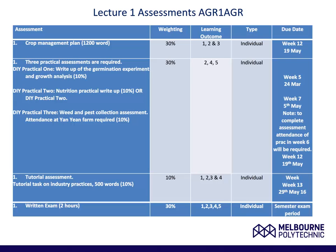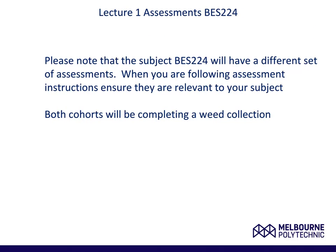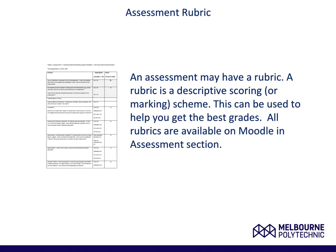Finally, there will be a tutorial assessment worth 10% and at the end, a two-hour written assessment. Please note that for subject VES 224, the assessments will be slightly different; however, both cohorts will be completing a weed collection. The equine students will be given more details of their assessments by Heather. For students who have not studied before, we supply for some assessments a document called an assessment rubric — this is a detailed description of the scoring or marking scheme applied to each assessment, and can help you better understand your grades. All rubrics where available will be on Moodle.